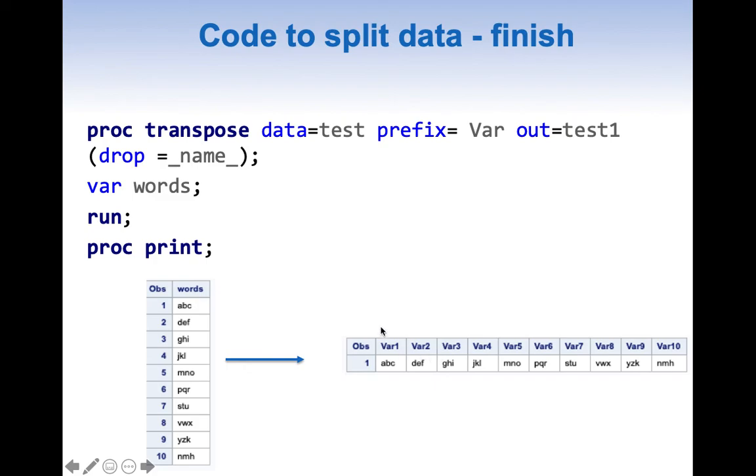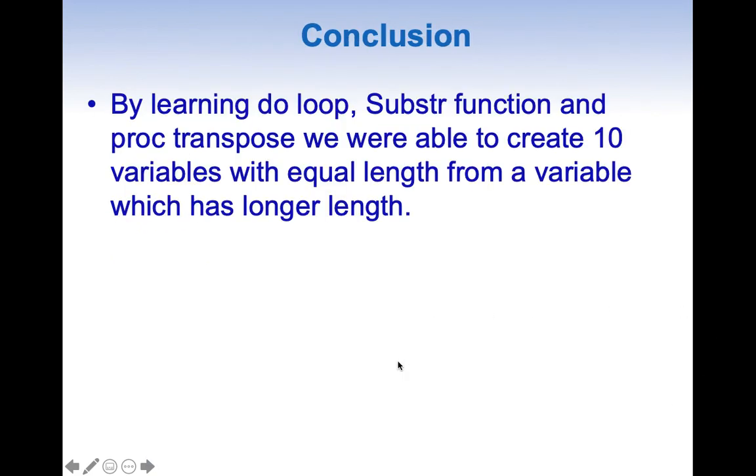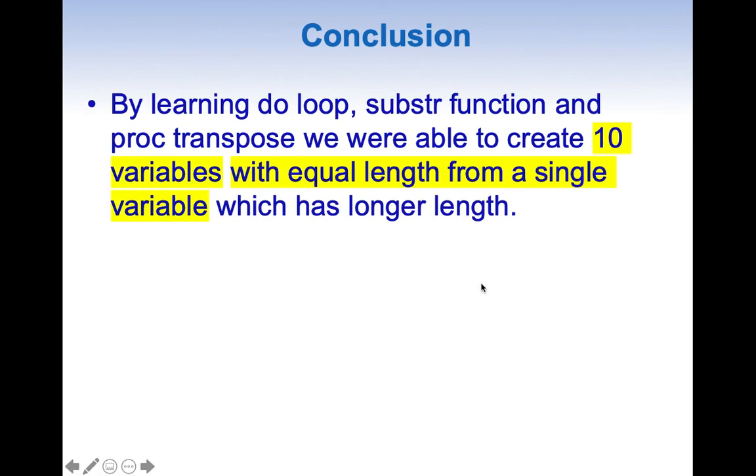It's time to conclude our topic. By learning the concepts of do loop, substr function, and proc transpose, we were able to create 10 variables with equal length from a single variable which has longer length. That's all for this topic. If you like this, please give it a thumbs up, share, and subscribe. Thank you.